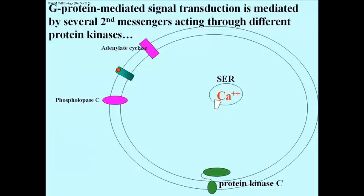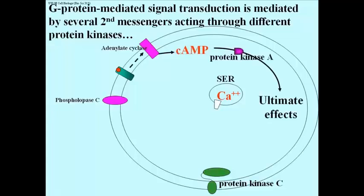Cyclic AMP is one of several second messengers in cells made during a G-protein-mediated signal transduction. Let's include the cyclic AMP-mediated activation of protein kinase A, or PKA for short.